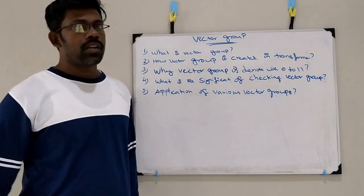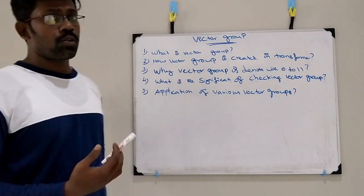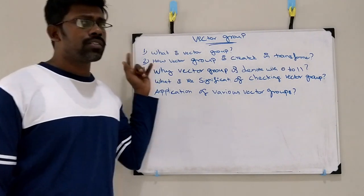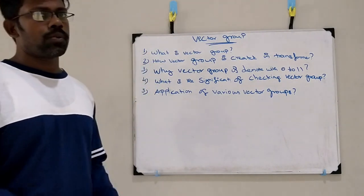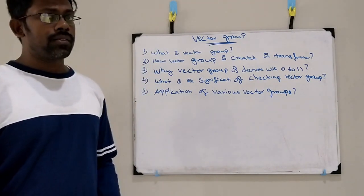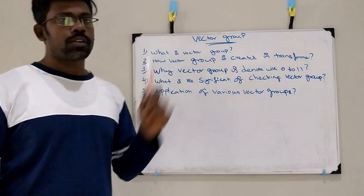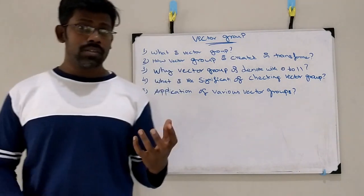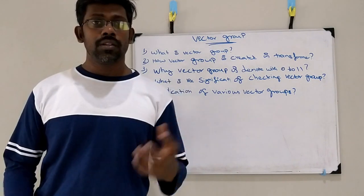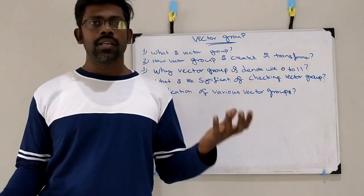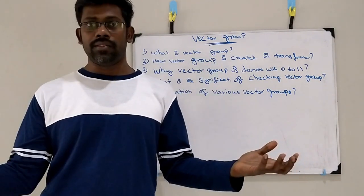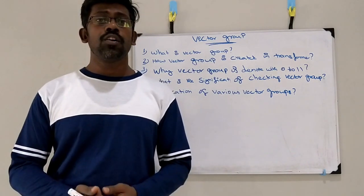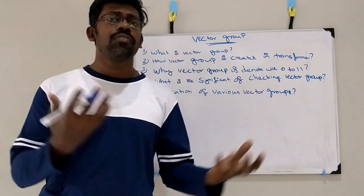Hi, today we are going to see about the vector groups and we are going to see 5 questions related with this vector group. What is vector group? The vector group denotes the phasor difference between the primary side and secondary side, and also it denotes the winding configuration.